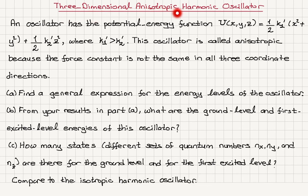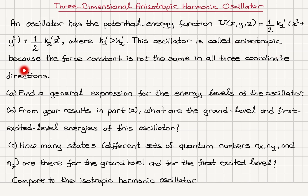Three-dimensional anisotropic harmonic oscillator. An oscillator has the potential energy function u(x, y, z) = (1/2)k₁'(x² + y²) + (1/2)k₂'z², where k₁' is greater than k₂'. This oscillator is called anisotropic because the force constant is not the same in all three coordinate directions — it's different for the z direction.